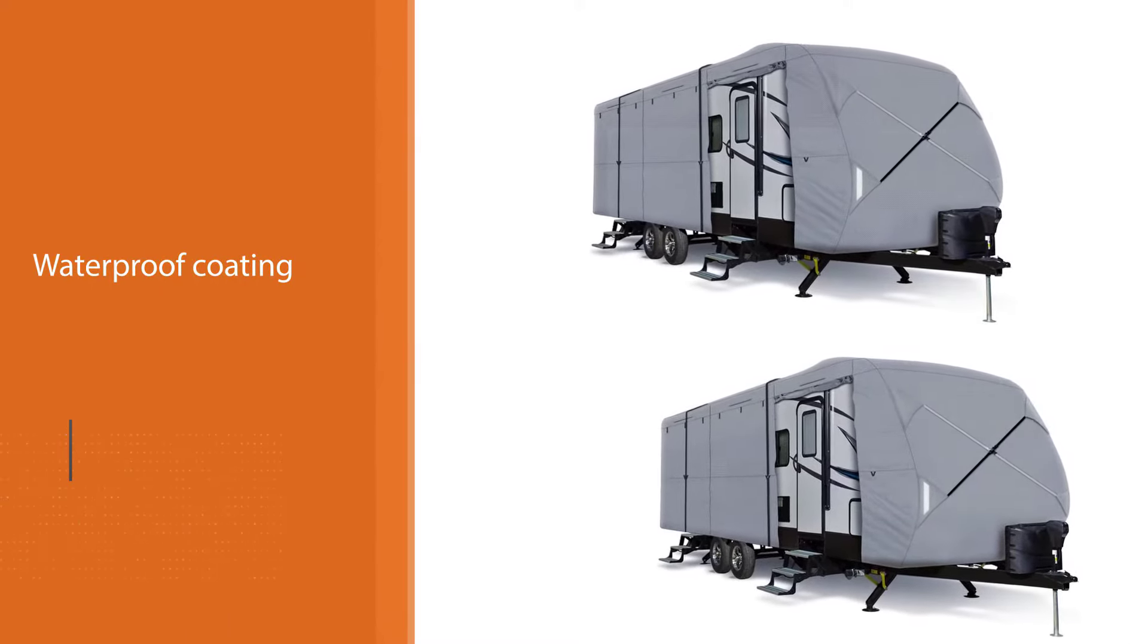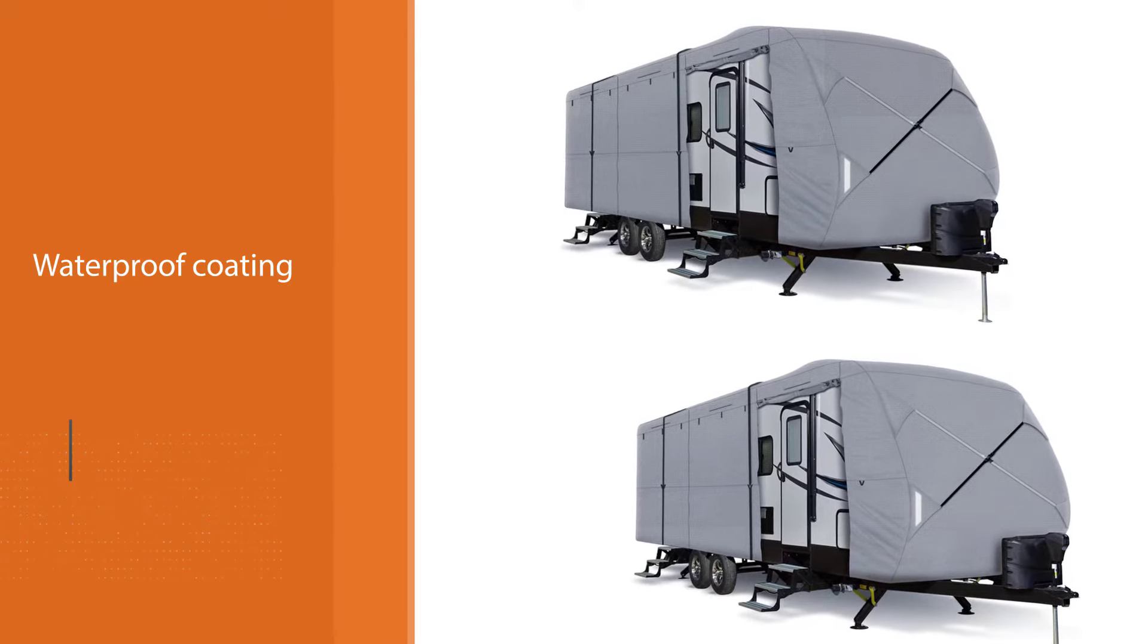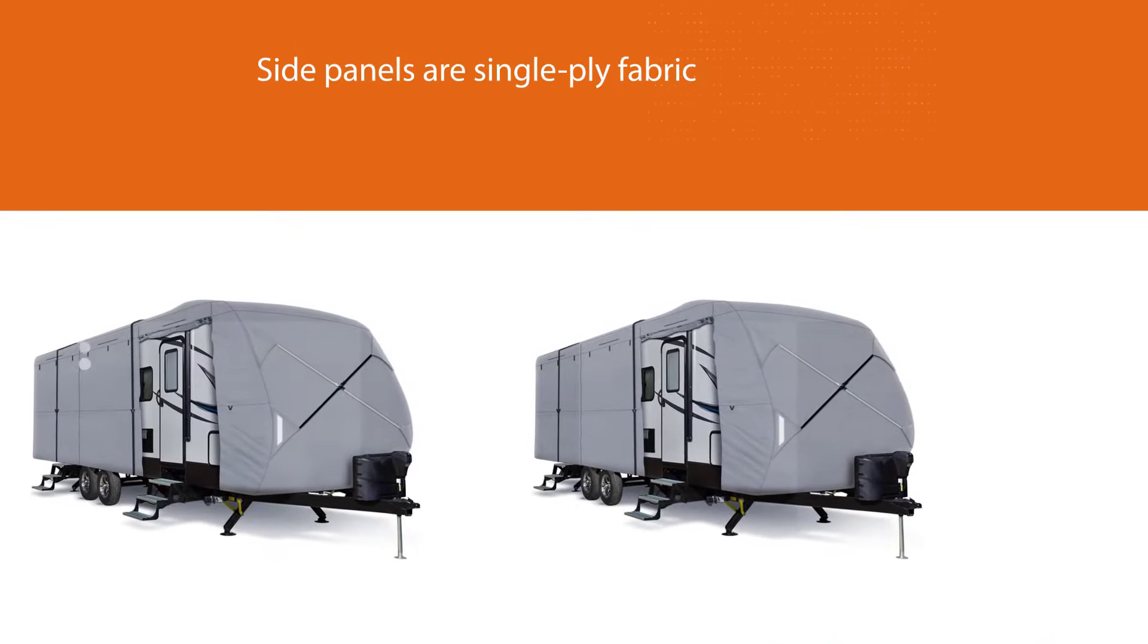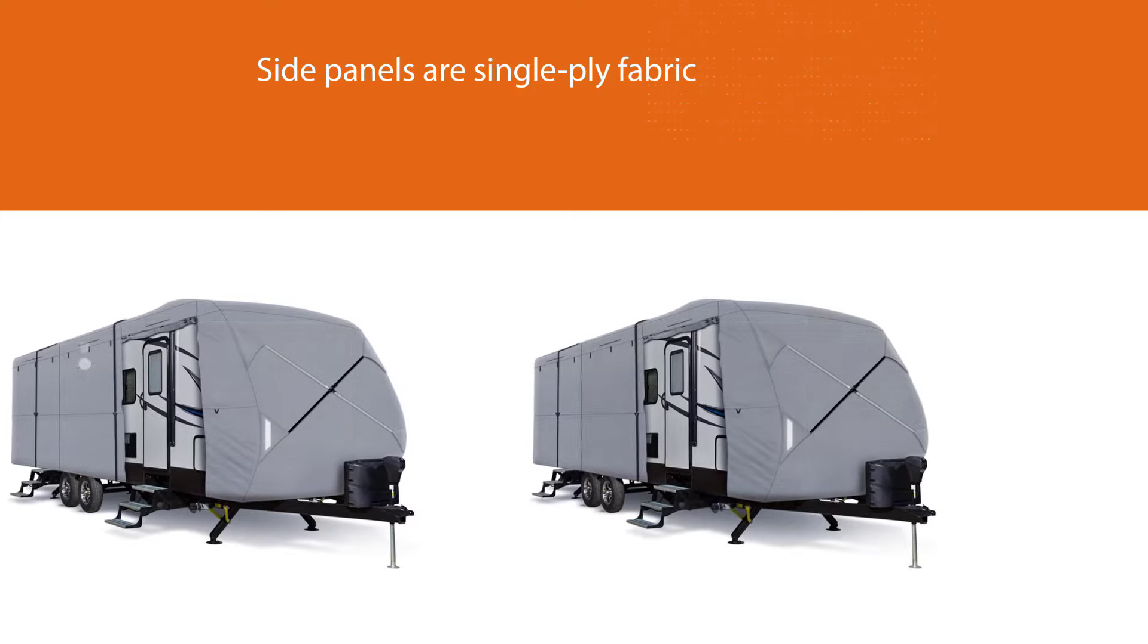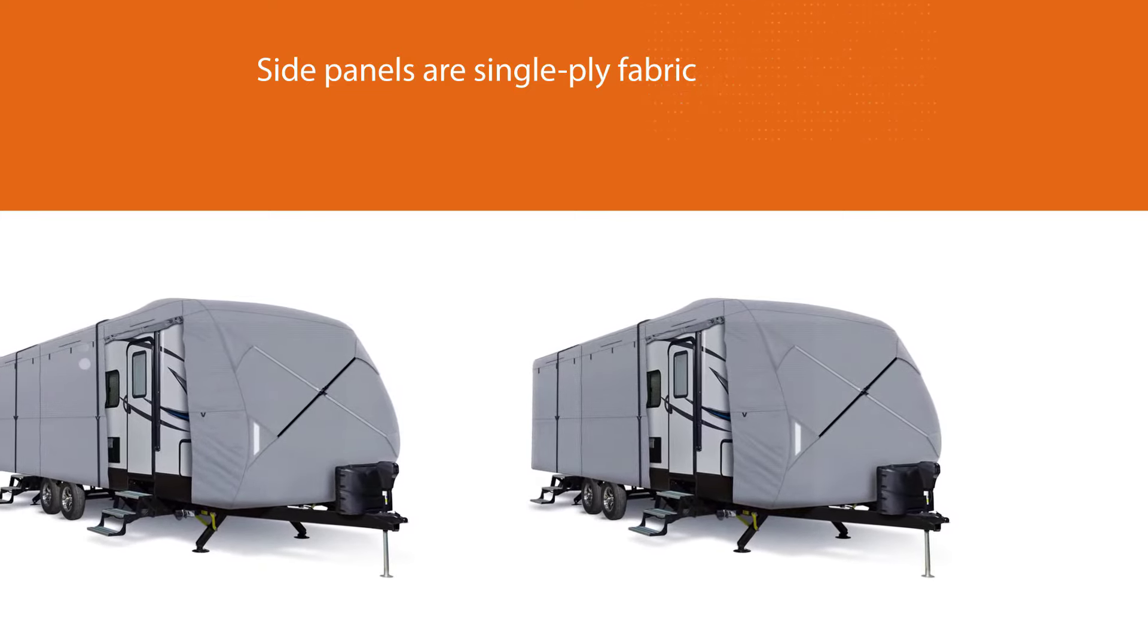There are vents to reduce wind damage and an elastic hem around the corners for a snug fit. And for easy access while it's stored, this RV cover has a zippered access panel that rolls up when you need to get inside.